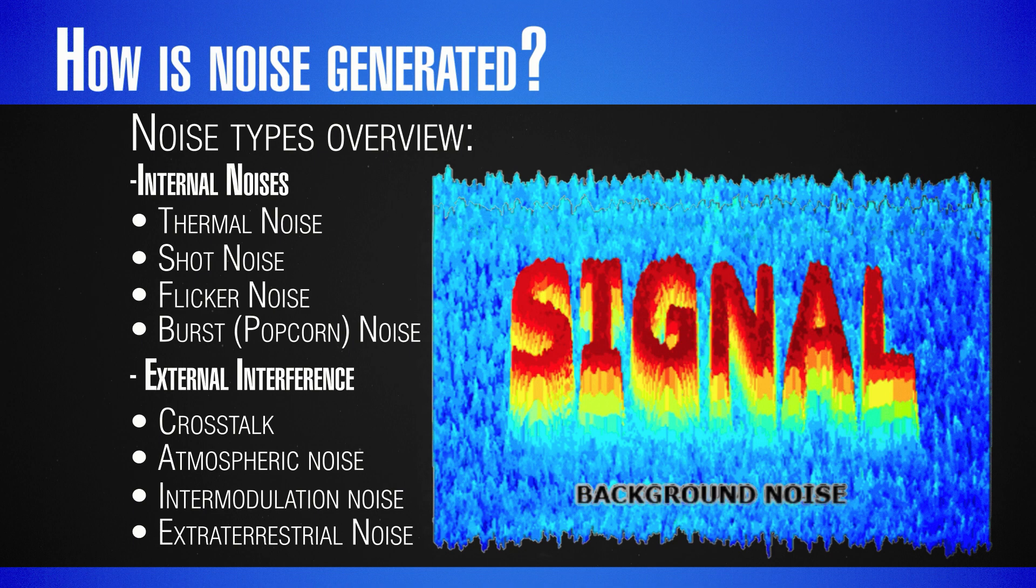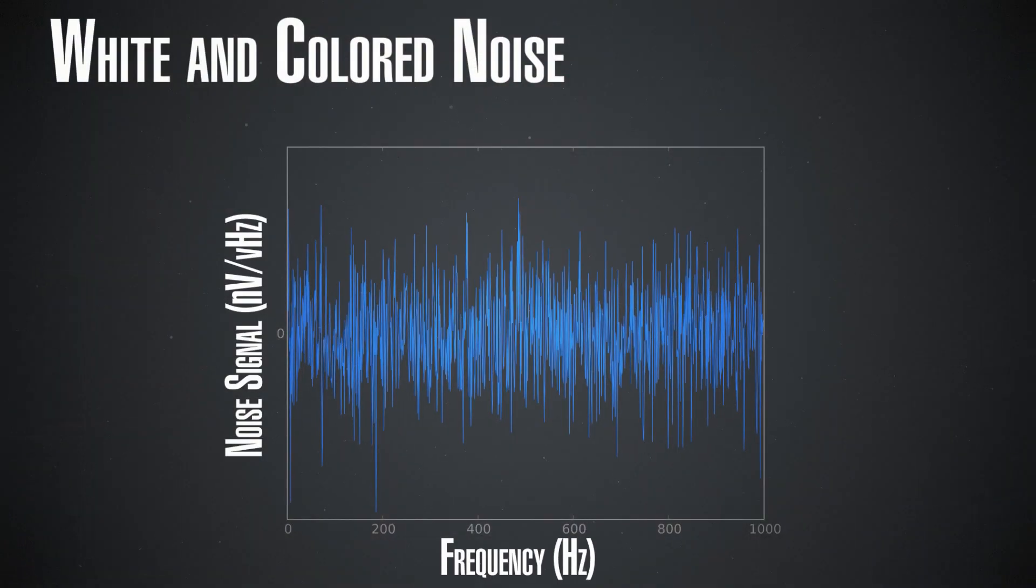Two more sources of noise known as the flicker noise and burst noise appear in electronics. One of them is produced by resistance fluctuations while the other one results from bursts of trapped charge carriers. Before going into any details, there is one important distinction that we have to make: that between white noise and colored noise.